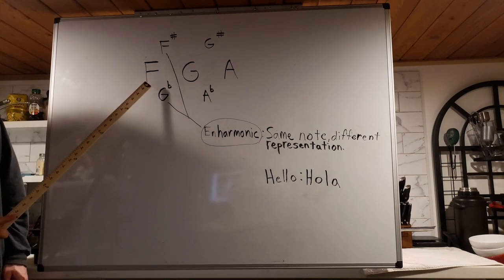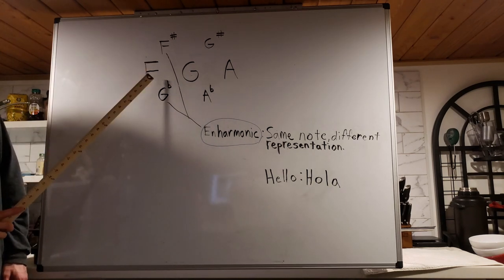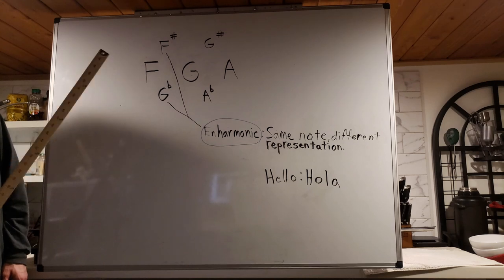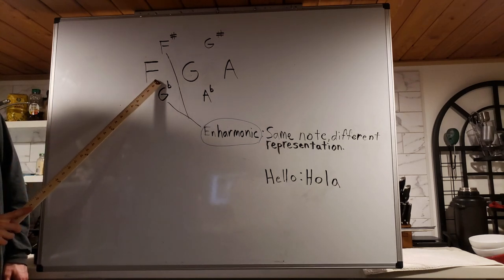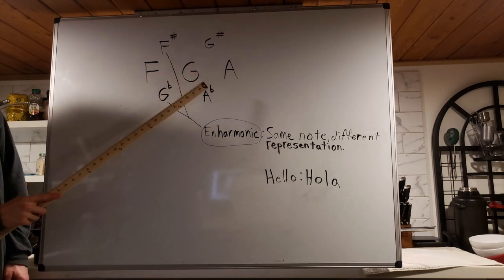So if we look at our flats and our sharps from F to A, we have five steps, including the first one. One, two, three, four, five.